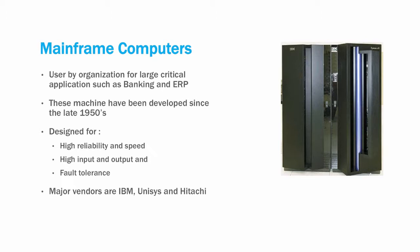Mainframe computers have been developed since the late 1950s and were some of the earliest computers in use in industry. These computers were designed to run large mission-critical applications such as banking and ERP systems. These machines are designed to be fast and highly reliable, and they are also designed to handle applications that require high input and output. Major vendors of mainframes include IBM, Unisys, and Hitachi.